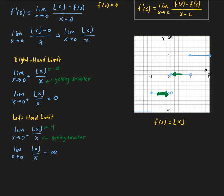The right-hand limit we got was 0, and the left-hand limit is infinite. These two limits don't equal each other, so therefore the limit of the floor function divided by x as x approaches 0 — the overall limit — does not exist.